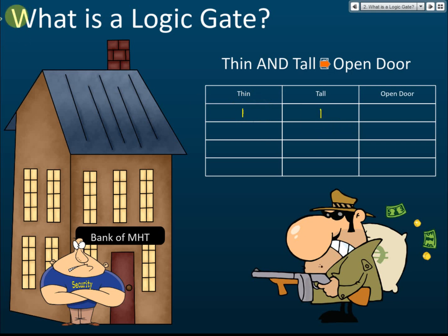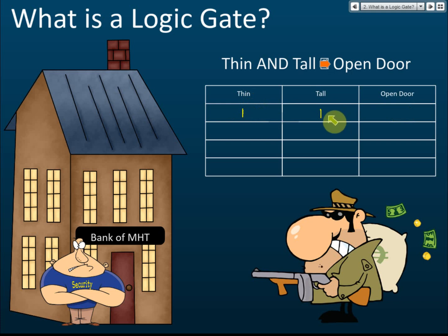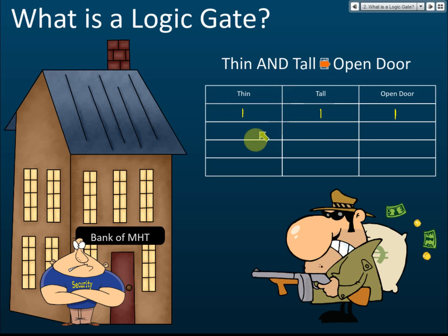The instruction given to the security guard is: open the door if the customer is thin AND tall. The first customer is thin and tall, so the security guard opens the door — represented as one. The second customer comes: he is thin but not tall, he's short, so for tall we use zero.